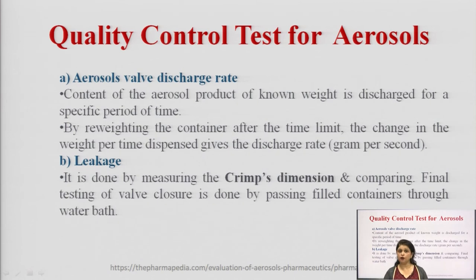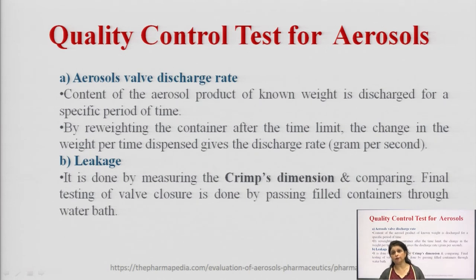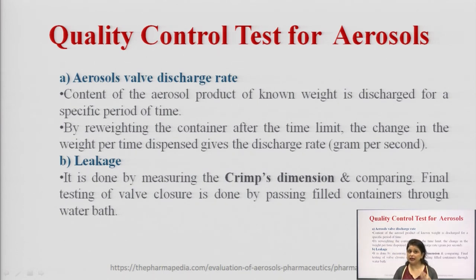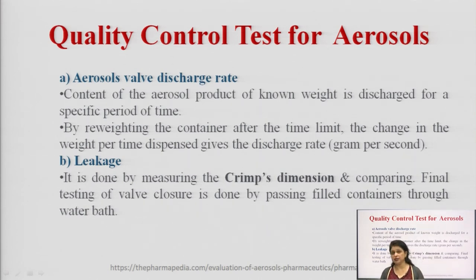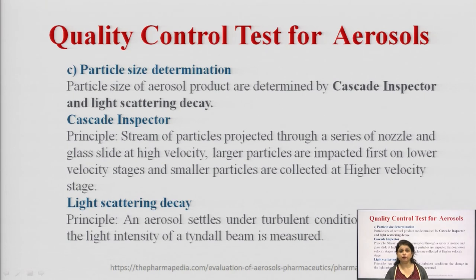For the leakage test, it is done by measuring crimp dimensions, and the final testing of valve closure is done by passing filled containers through a water bath. In every manufacturing process — whether cold filling, pressure filling, or compressed gas filling — we always pass containers through the water bath. If there is any leakage, bubbles will be generated, indicating that the valve system is not properly placed onto the aerosol container.